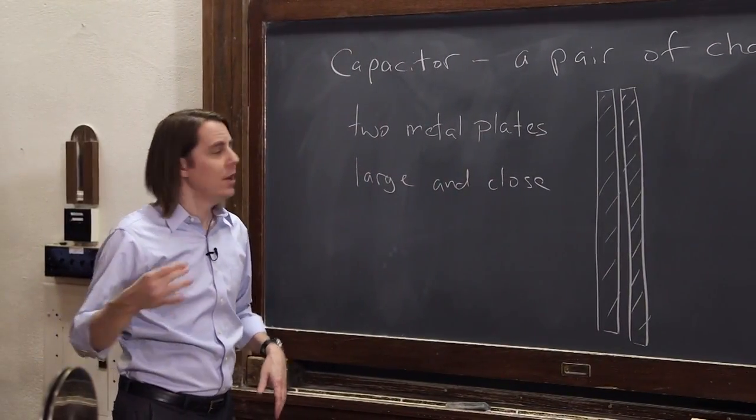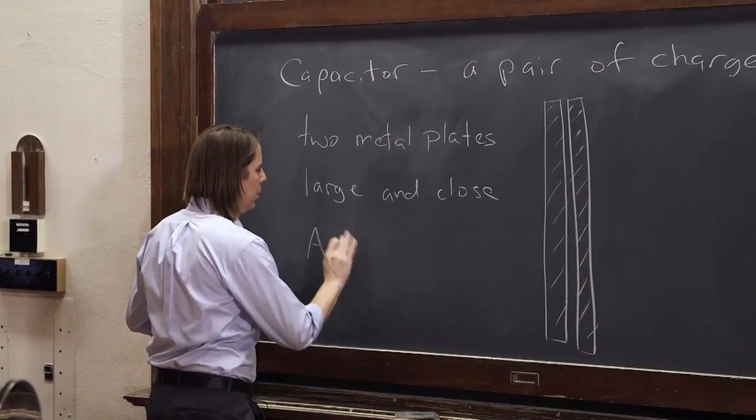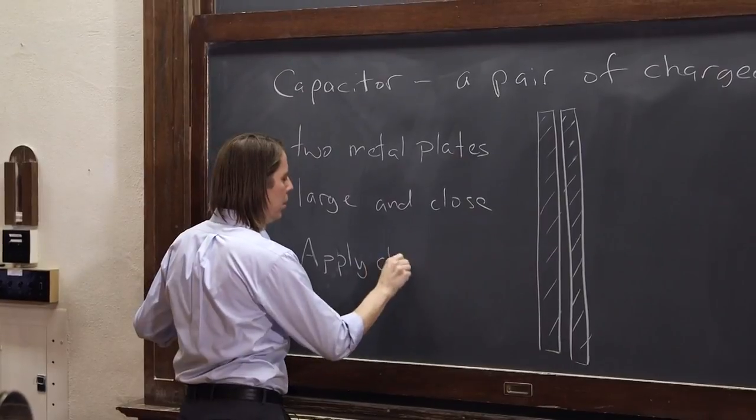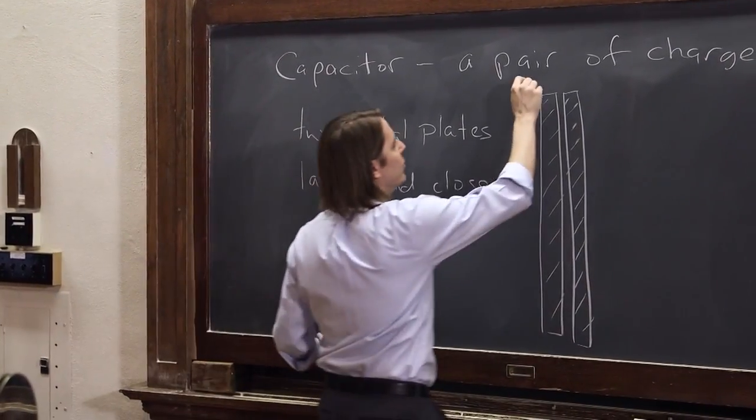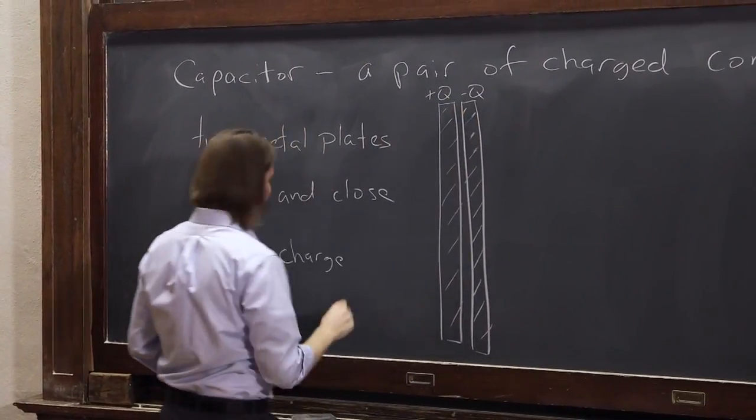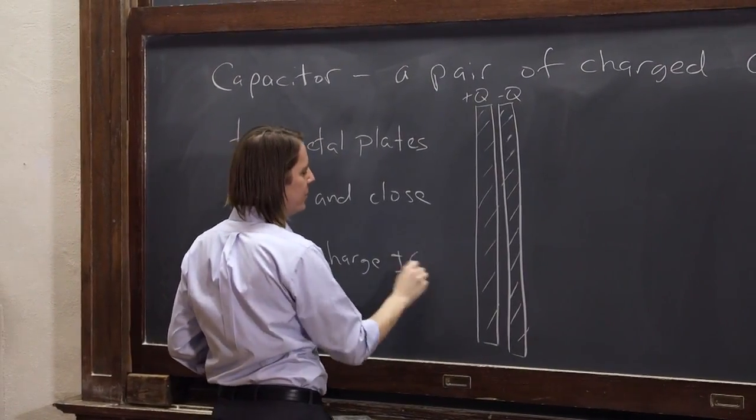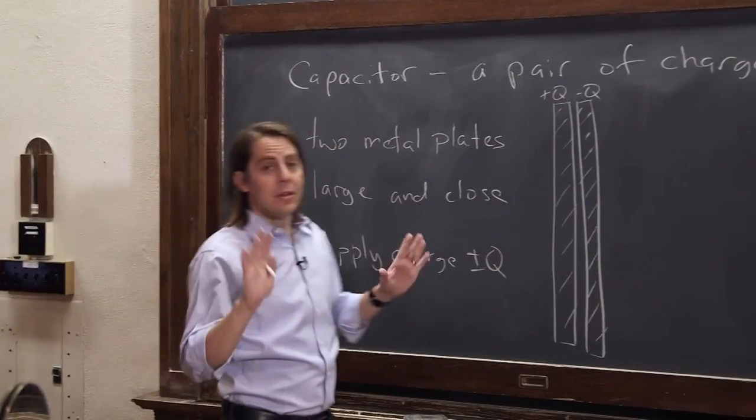And we're going to apply a charge to these plates, Q. But the key with the capacitor is it's oppositely charged. So one plate has plus Q and one plate has minus Q. So I'll just put plus and minus Q there.